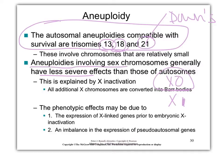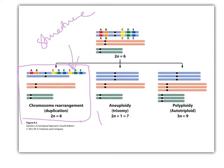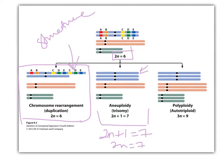Here's an example of a chromosome rearrangement — a duplication. This is still 2N equals 6, so this is a chromosome structure problem, not a polyploidy or aneuploidy. In this case, it is an aneuploidy — we have too many chromosomes. We're supposed to have two of each; we have one extra. It's 2N plus 1. So if the original is 2N equals 6, you'd write it 2N plus 1 equals 7, not 2N equals 7.